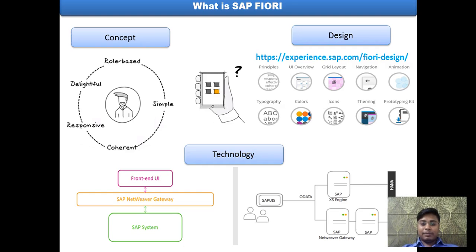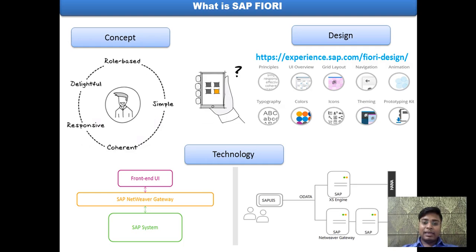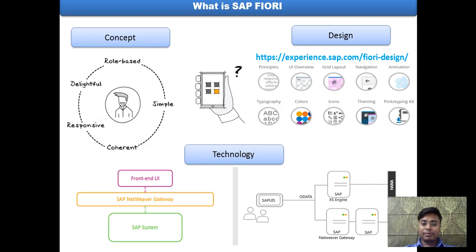In the technology dimension, which is a very important dimension — as all of us are working in this particular section — there are different layers that consist of different technologies. From bottom to top, that would be the database layer, SAP Business Suite layer (that is ECC), the native layer, and the front-end layer. The technologies and tools used across different layers are HANA, OData, SAP UI5 — which consists of HTML5, CSS, JavaScript, etc. By now you can have a brief overview and the basic idea of Fiori.